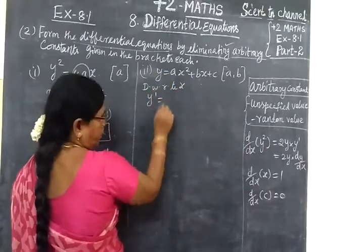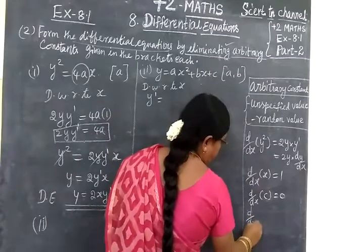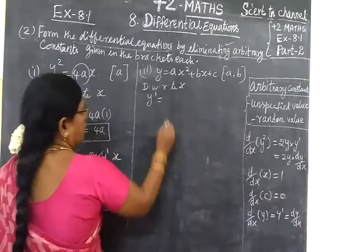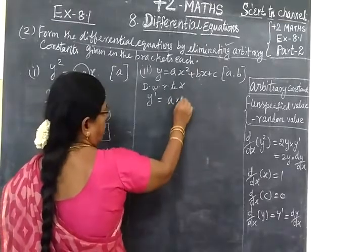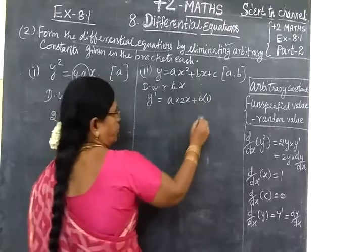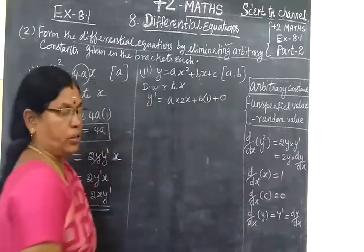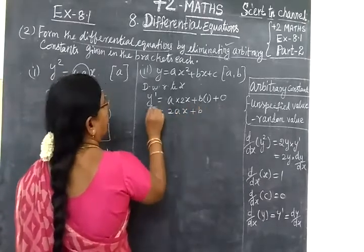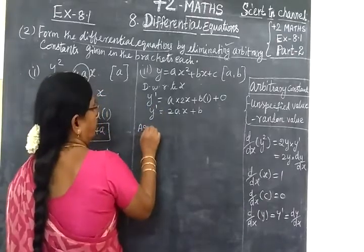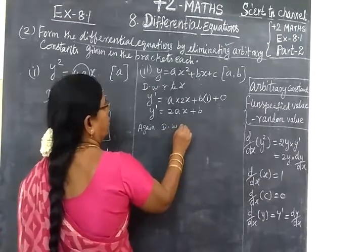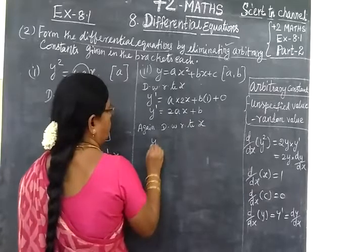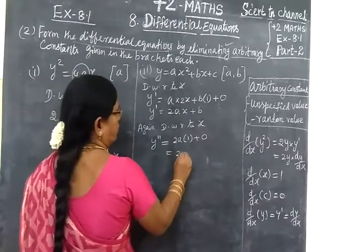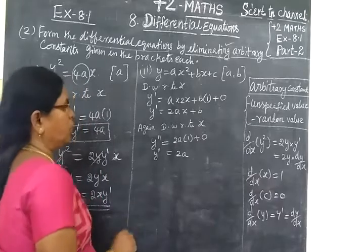So y differentiation is y dash. D/dx of y equals y dash. Y dash is dy/ds. A — extraordinary differentiation: 2s plus b. Extraordinary differentiation: 1. Differentiation: 0. Constant: 0. So, 2As plus B. Again you are differentiating because there are 2 arbitrary constants. So again differentiate with respect to s. So y double dash equals 2A — s double dash differentiation is 1, B double dash differentiation is 0. So y double dash equals 2A.